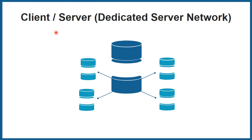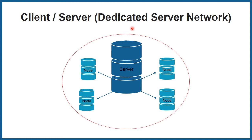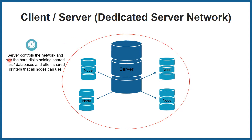The first network model is client-server, also called a dedicated server network. In this network, a server is connected with different clients shown as nodes in the picture, and they establish a network for communication. In this model, the server holds complete information and clients can access any information from it. The server controls the network and has a hard disk holding shared files, databases, and often shared printers that all nodes can use.